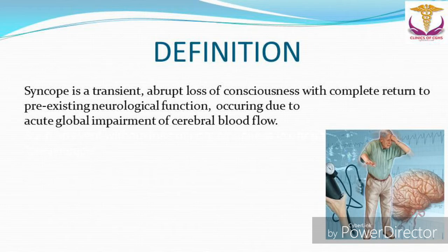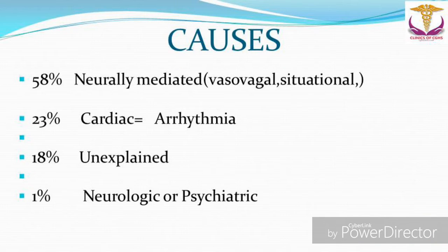Today we will be talking about a clinical approach to a patient with syncope. By definition, syncope is a transient, abrupt loss of consciousness with complete return to pre-existing neurological function, occurring due to acute global impairment of cerebral blood flow. The causes of syncope are 58% neurally mediated (vasovagal or situational), 23% cardiac causes due to arrhythmias or structural cardiac disease, 18% unexplained, and 1% due to neurologic or psychiatric reasons.